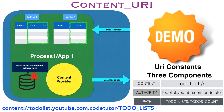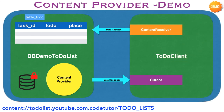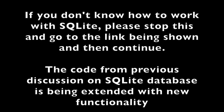I think we have enough understanding to get into a demo. Before going into the demo, let me tell you what we will be doing. We will be reusing the application 'db demo to-do list' which we implemented in our db adapter discussion. We already have a database containing a table called 'table_todo' with three columns: task_id, to-do, and place. It is now all about implementing the Content Provider. Once implemented, the later part is implementing another app 'to-do client' which will consume data from the Content Provider. So let's have a look at the code.